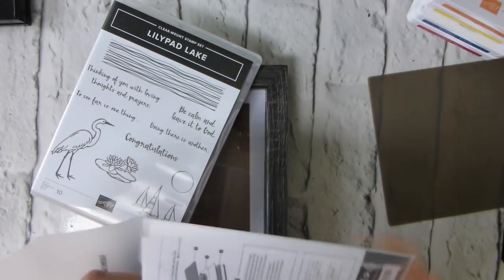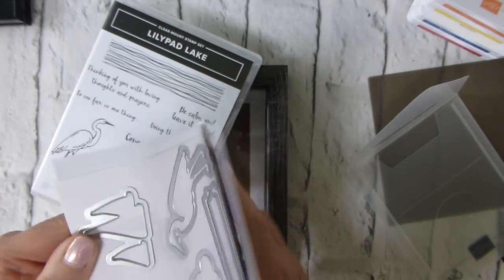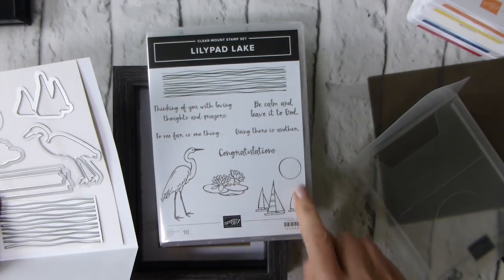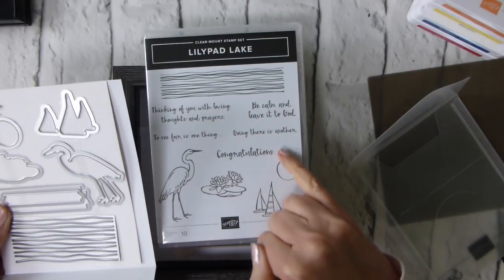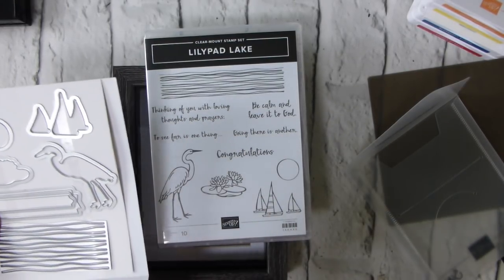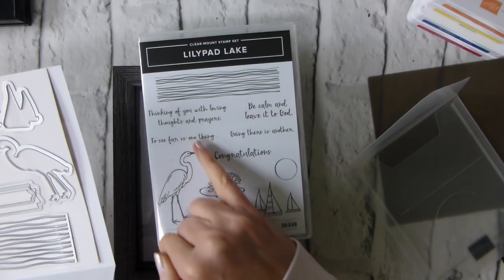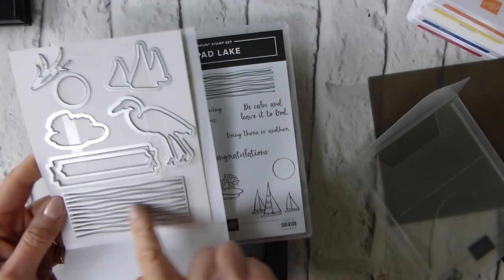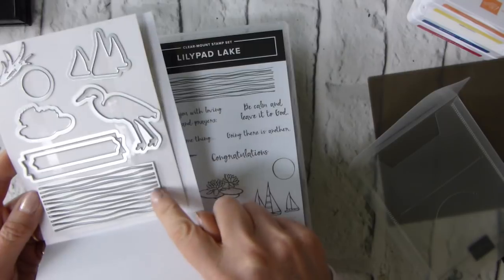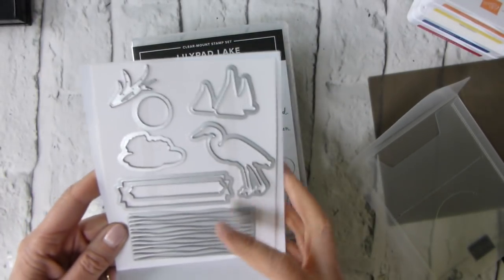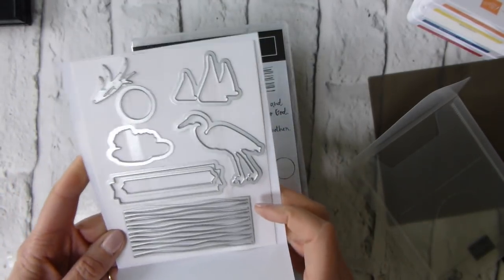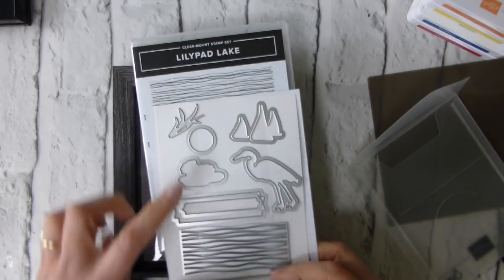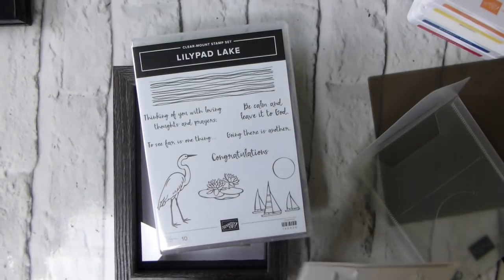I will show you the dies, because otherwise it's just a packet. So these are the dies. We have dies to cut these boats, and they cut in one pass. A die to cut the sun, which could also be the moon, one to cut the Lilypad, one to cut the crane, and then some labels and waves. The waves do not cut the wave stamp, but they can cut paper to make waves. There is also this fern or plant.